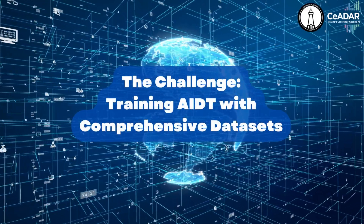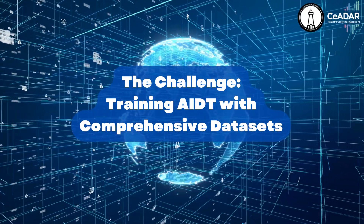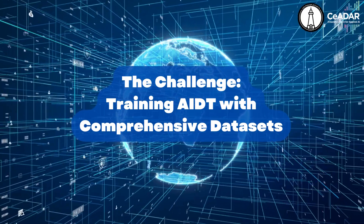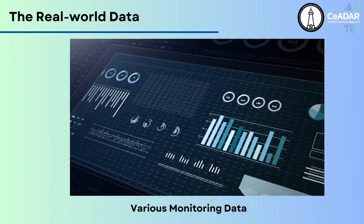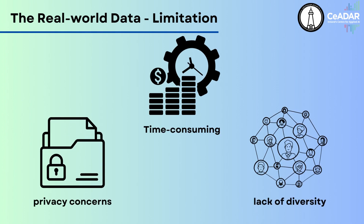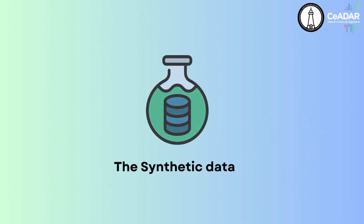AIDT is a powerful tool, but one of the great challenges we encounter is generating comprehensive datasets. We need data that accurately reflects the complexity of human activities, like traffic data, energy consumption data, or monetary data, and so on. Real-world data has its limitations — collecting it can be time-consuming and costly, and there are concerns around privacy and lack of diversity. Moreover, it may not cover all possible scenarios or represent all segments of the population. This is where synthetic data comes in.